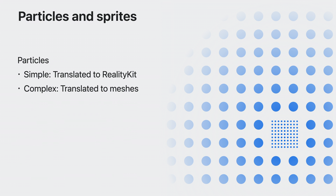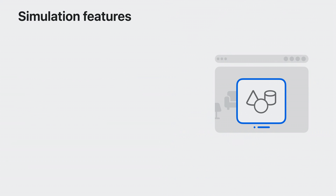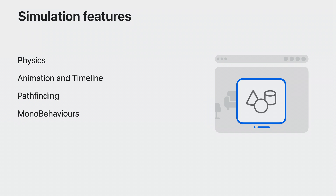Particle effects using Unity's Shuriken system are either translated to RealityKit's particle system if they are compatible, or are translated to baked meshes. Sprites become 3D meshes, though you should consider how you're using them in a spatial context. Polyspatial works to optimize and translate rendering between Unity and RealityKit. Simulation features in Unity work just like you're used to, such as physics, animation and timeline, pathfinding and navmesh, your custom mono behaviors, and other non-rendering features.